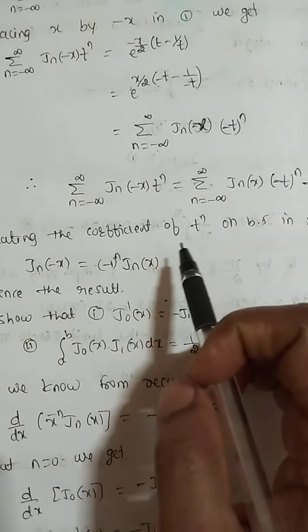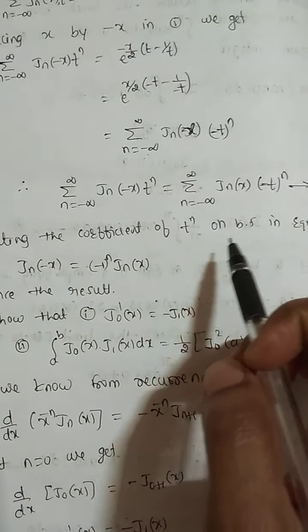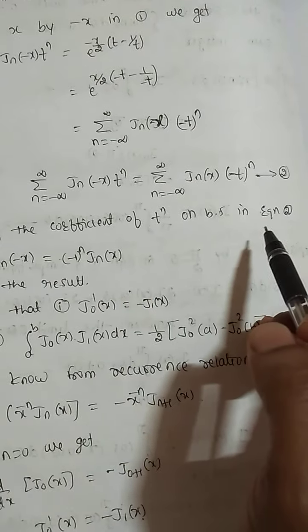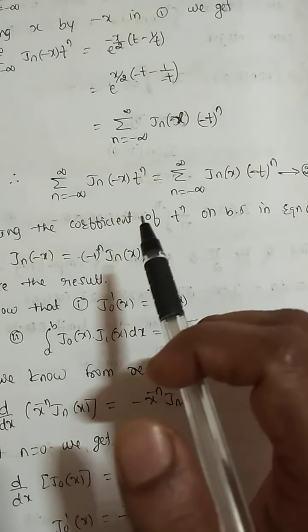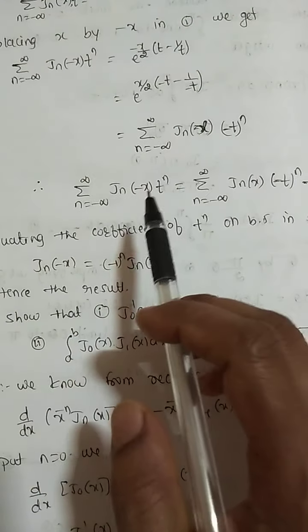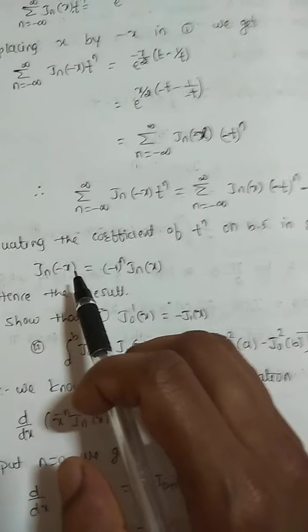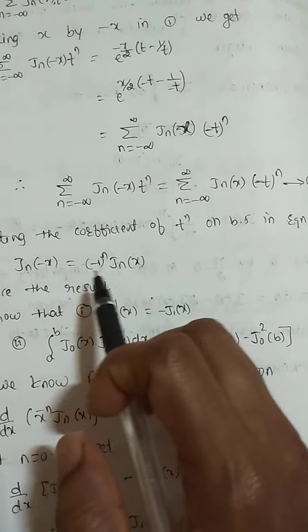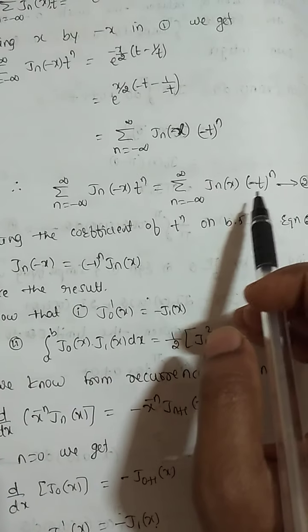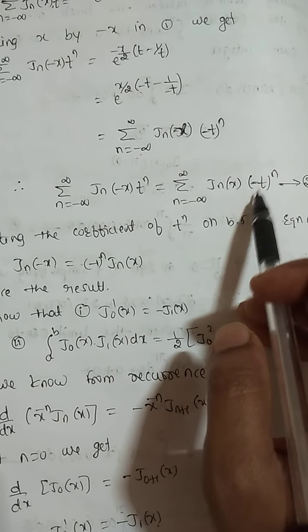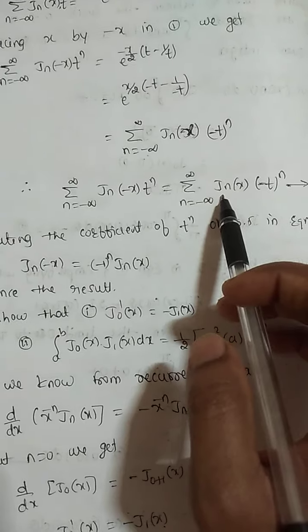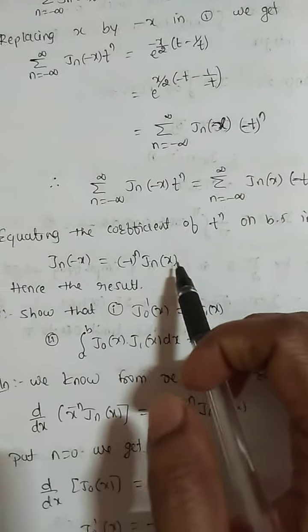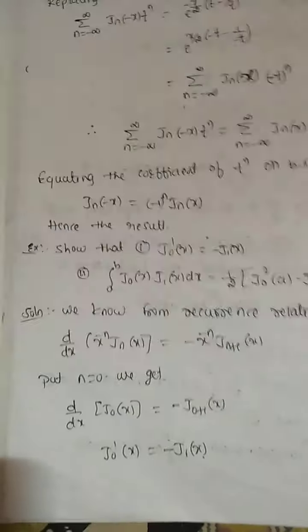Equating the coefficient of t^n on both sides in equation 2: J_n(−x) equals (−1)^n · J_n(x). This is the required result.